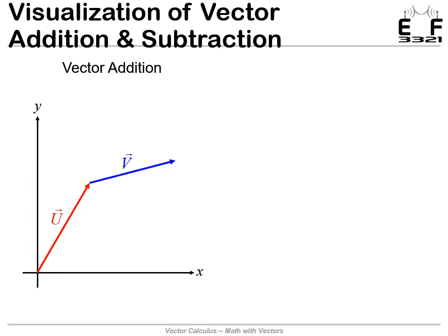Let's talk about vector addition. Let's say we have two vectors, U and V, and we'd like to calculate a third vector that is U plus V. Visually, we'll draw one vector U and then draw the next vector starting from the tip of the first vector. The sum of those two is a vector extending from the beginning of the first to the end of the second. They make a triangle, and the long side of that triangle is the vector sum.